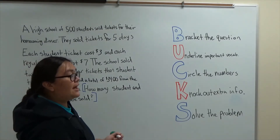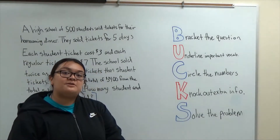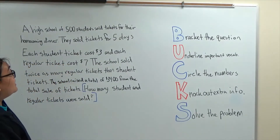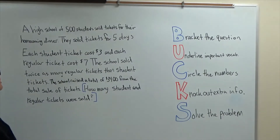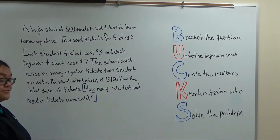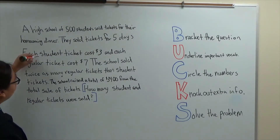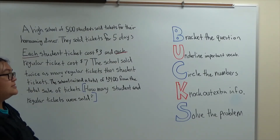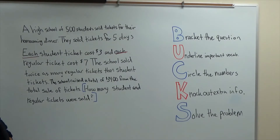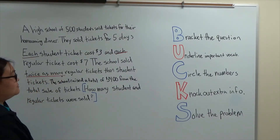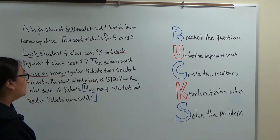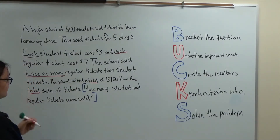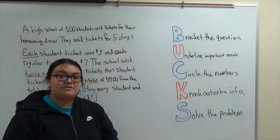Next, I need to underline important vocab. This helps us know which operations we might be doing later on in the problem. So a high school of 500 students sold tickets for their homecoming dinner. They sold tickets for five days. Each student ticket cost three dollars and each regular ticket cost seven — this will let us know that we have multiplication somewhere when we solve. The school sold twice as many — another multiplication phrase — regular tickets than student tickets. The school raised a total of three thousand four hundred dollars from the total sale of tickets. Total lets us know that we will have addition later on in the problem.